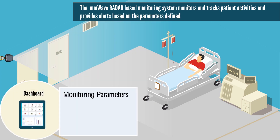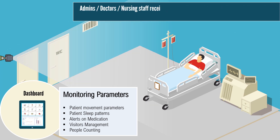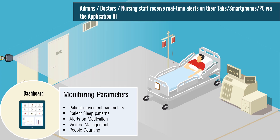The MMWave radar-based monitoring system in the room monitors and tracks patient activities. The system provides alerts and notifications based on the parameters defined. Some of the standard monitoring parameters include patient activity or movement monitoring, patient sleep patterns, staff and visitors management, and people counting. On any of these instances, admins, doctors, and duty nurses will receive real-time alerts on their tabs, smartphones, and personal computers via the application.